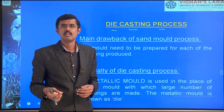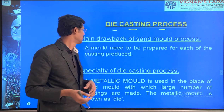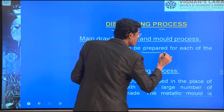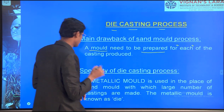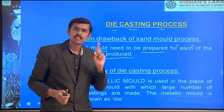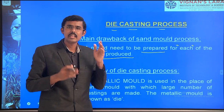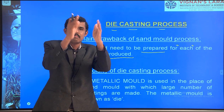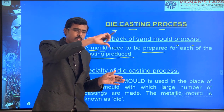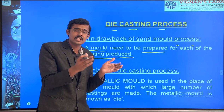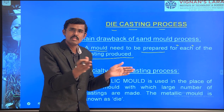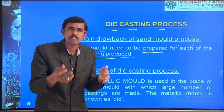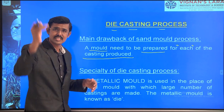In die casting, instead of sand we are using metal. A mold needs to be prepared for each casting produced in sand casting. For 10 products we have to prepare 10 sand molds, and each takes a minimum of 30 to 45 minutes. But in die casting, a fixed metal pattern box is ready — we fix, pour, the dry metal product is ready, we remove it, do a cleaning process, and we can use it again. The same metal box can be utilized 1000, 2000, or more times. Time reduction also takes place.